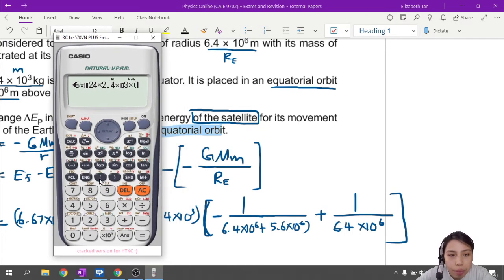Back to this, times 6 times 10^24 times 2.4 times 10^3 times, ah now this part, you'll be careful a bit lah because there's fractions here and there. So we're going to put a bracket, big big bracket and insert the first fraction. Negative fraction. So this will be 1 over, you can also put negative 1, I suppose. 6.4 times 10^6 plus 5.6 times 10^6.